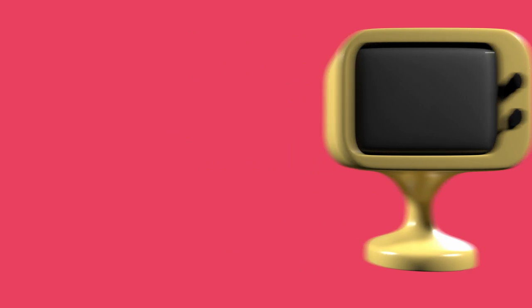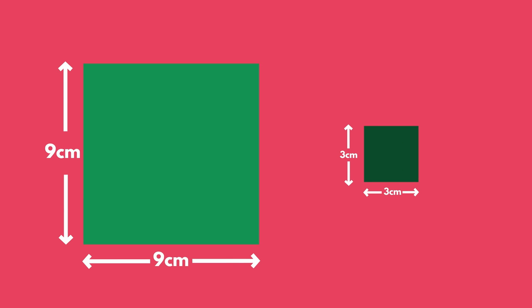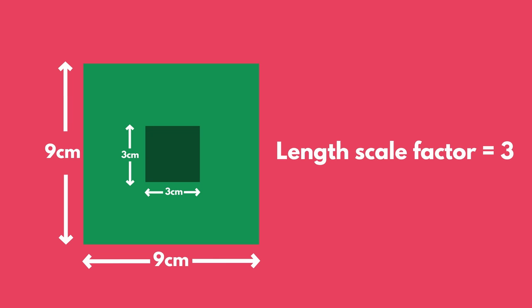Similarity is commonly used in scale models of similar shapes. Let's see the following similar squares. The lengths of the larger square are three times longer than the smaller square. The length scale factor of these two similar shapes is 3.